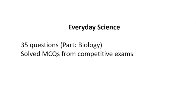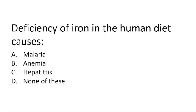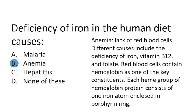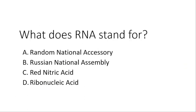Let's try solving the MCQs related to biology from the CSS past papers of General Science and Ability. Starting with the first question: deficiency of iron in the human diet causes — the correct answer is anemia. It is the lack of red blood cells, and the causes may be different. The key causes include deficiency of iron, vitamin B12, and folate. Red blood cells contain hemoglobin, and the heme group of the hemoglobin protein consists of one iron atom enclosed in a porphyrin ring, so deficiency of iron causes anemia.